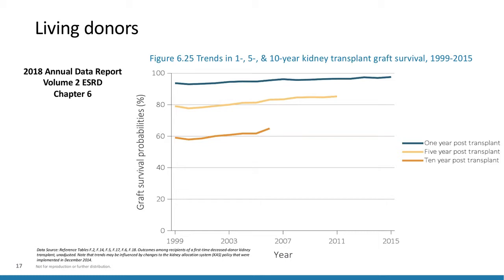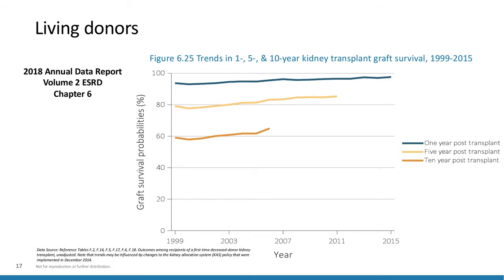The cause for late graft loss is fairly clearly rejection. A study looked at the causes of late graft loss: eight patients received a biopsy shortly before their kidney transplants failed, and the vast majority — about 64% when including probable ABMR and mixed rejection — had antibody-mediated rejection. Most patients who lost their allografts after some period of time had rejection as the cause. Interestingly, about 47% of those patients were non-adherent, so non-adherence is a major component as well.